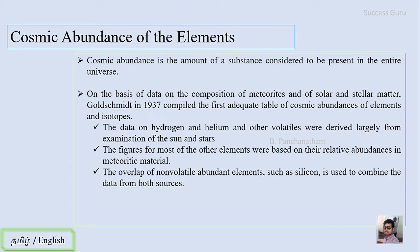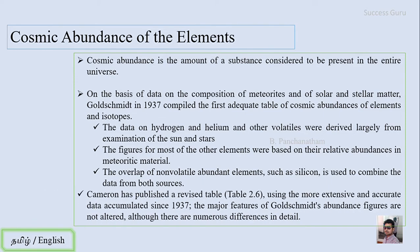There is an alteration in this Goldschmidt table by Cameron published as a revised table. Using more extensive and accurate data accumulated since 1937, the major features of Goldschmidt's abundance figures were not altered, although there are numerous differences in details.